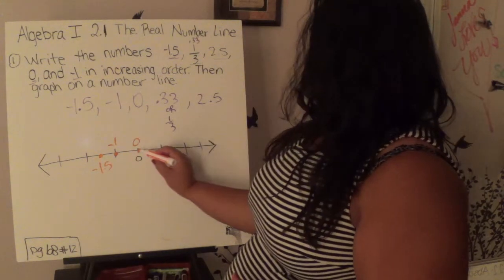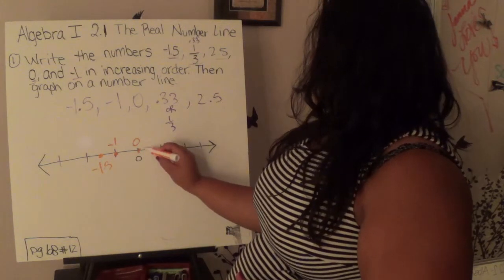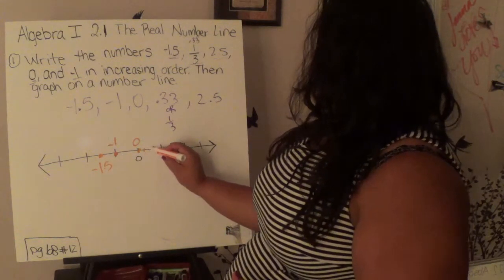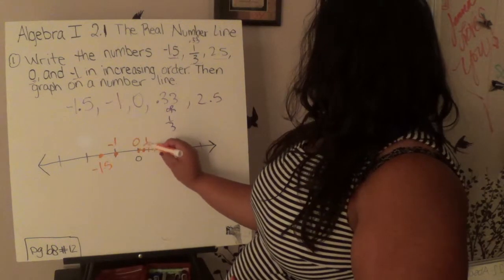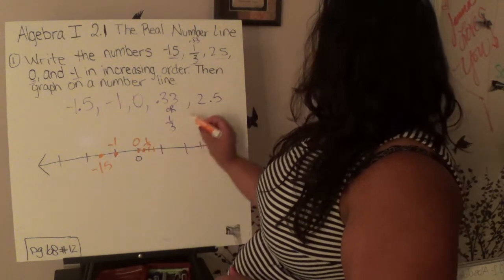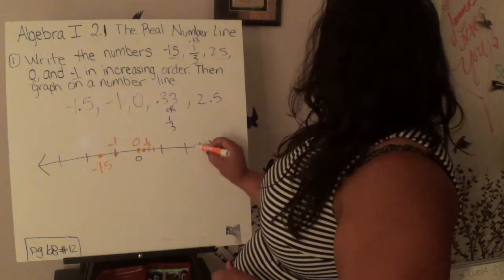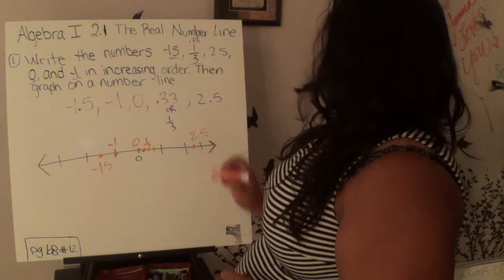Then we have 1 third. So if I took this and I divided it into thirds, this would be 1 third. And the last one would be 1, 2, and halfway there is 2.5.